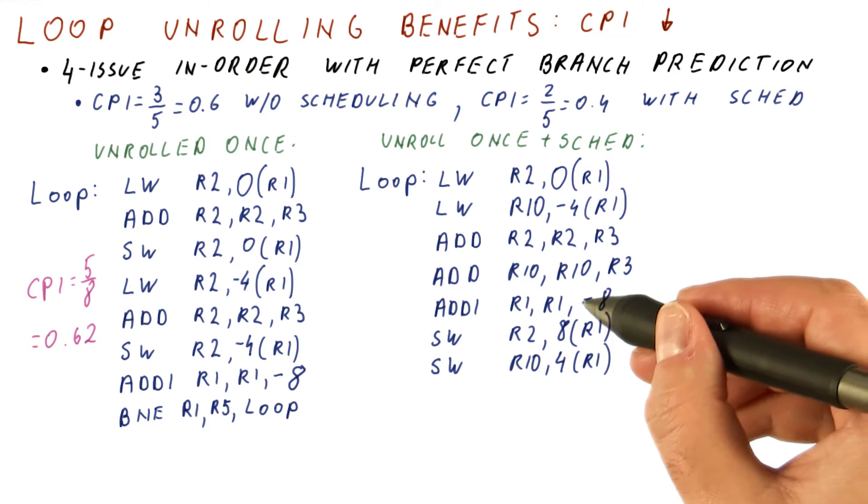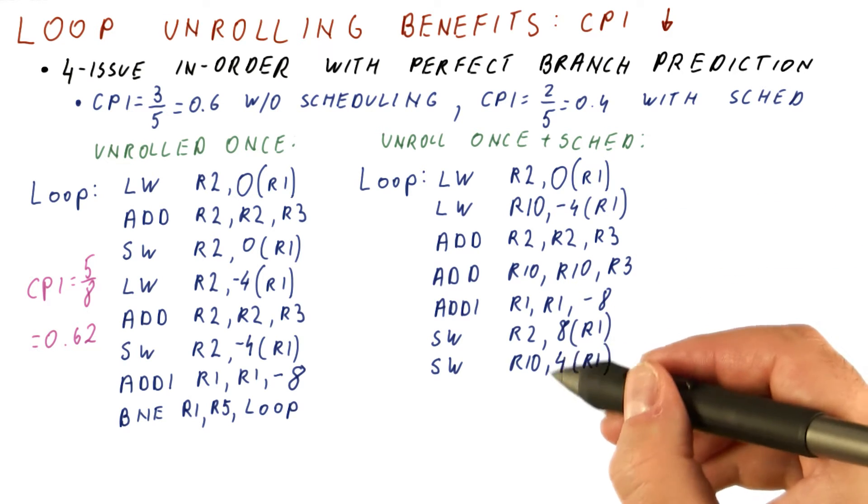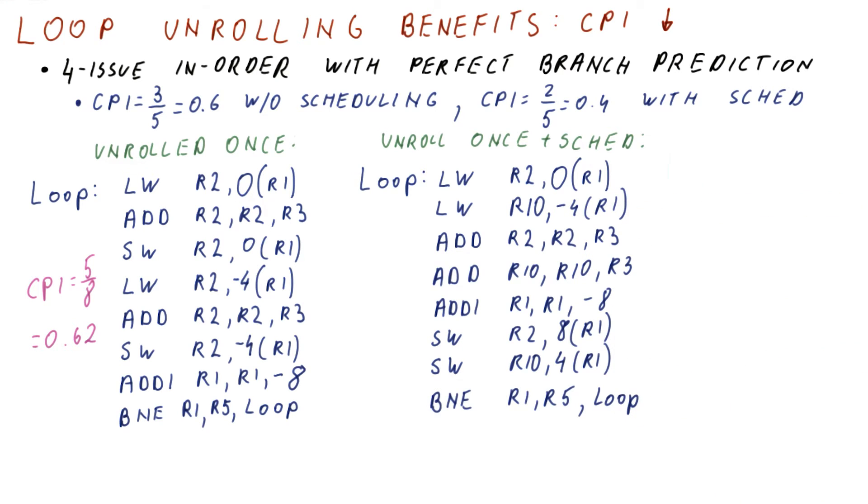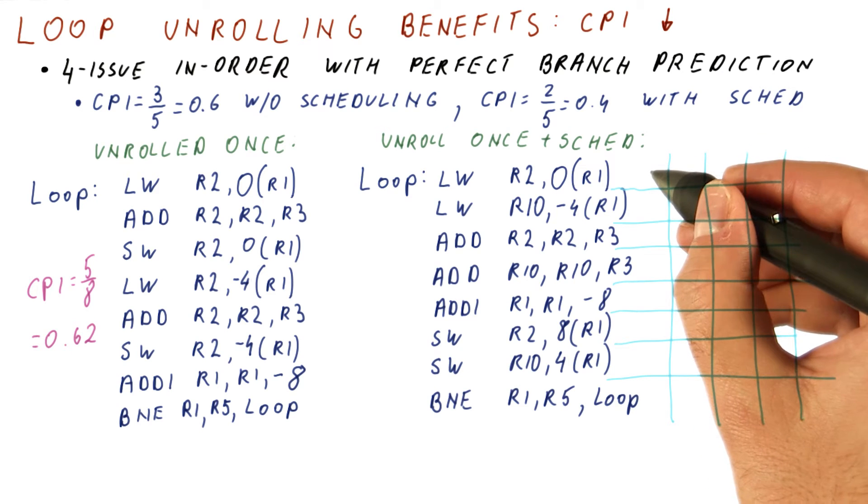And then, we did minus 8. So now, we need to add 4 to that in order to get minus 4. And now, we can do our branch. So now, let's see what can we get on our processor.